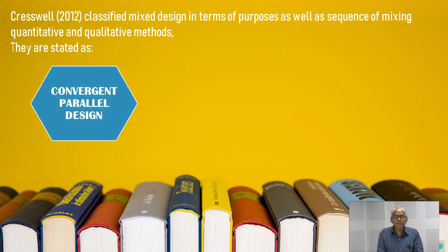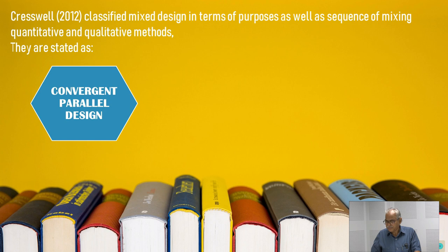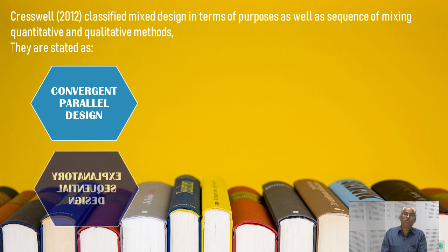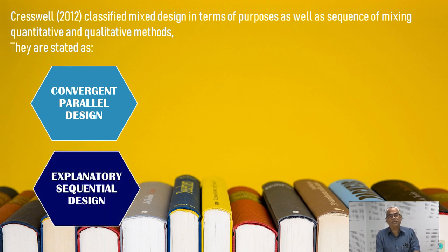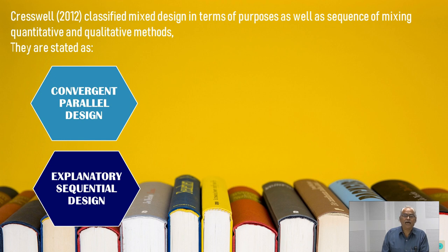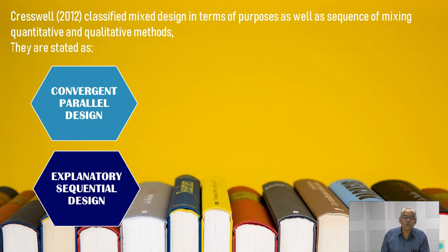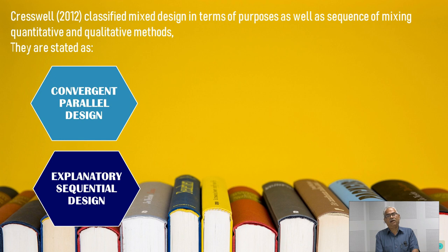In explanatory sequential design, experiments conducted by teachers are followed by qualitative interpretations of quantitative studies. The next approach — sometimes called exploratory sequential design — uses qualitative studies such as interviews, observations, and naturalistic studies to arrive at certain trends and factors influencing the phenomena. Such grounded theories are then tested through experiments conducted at the end of the qualitative studies.